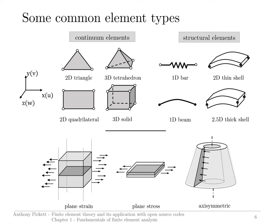Here are some popular elements used in finite element codes — not all of them, just a first introduction. On the left you can see 2D triangle and 2D quadrilateral elements, with variations having more nodes for better accuracy. For 3D structures, there are tetrahedron and solid elements. There are also structural elements such as bars and beams: a bar can only extend or contract lengthwise without transferring moments or torsions, while a beam can transfer moments and torsions in addition to axial extension.